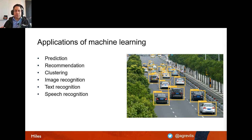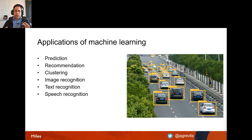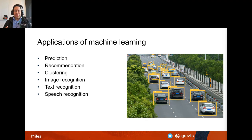Other applications of machine learning include recommendation systems — when you buy something online and are shown products similar customers also bought. There's also clustering: if you have a webshop with many customers, clustering finds similarities between groups so you can tailor options to each group. And you can use image recognition, text recognition, and speech recognition.